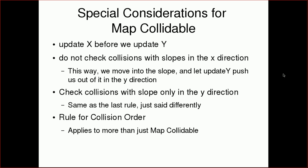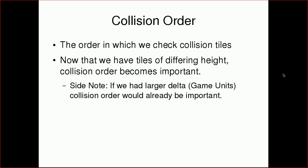The third special consideration applies more broadly and concerns collision order — the order in which we check collision tiles. Right now in map.getCollidingTiles, we sort by rows first then by columns, left to right, top to bottom. Now that we have tiles of differing height, collision order actually becomes important. With larger delta in game units it would already matter, but with tiles of differing height like slopes, it does.